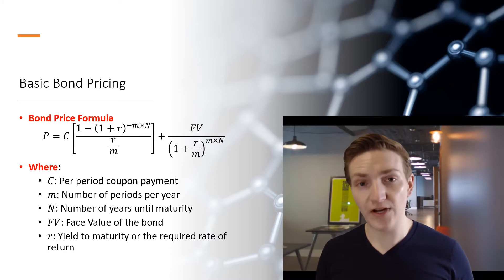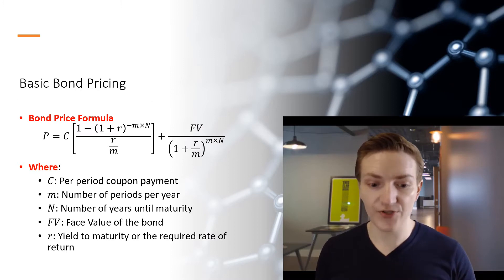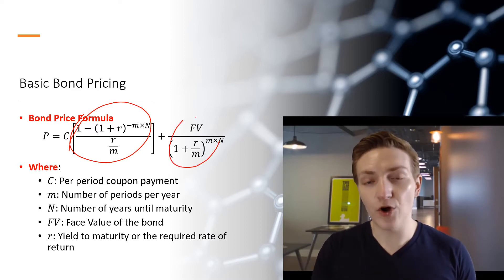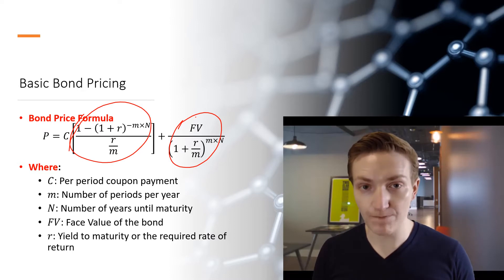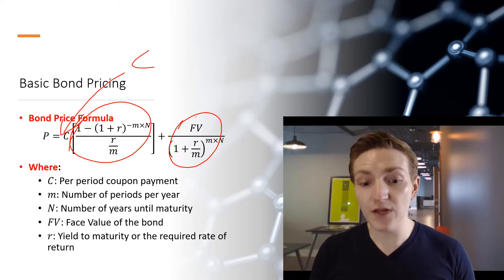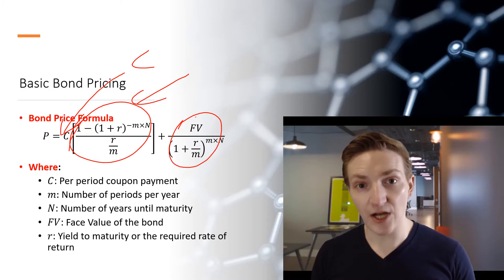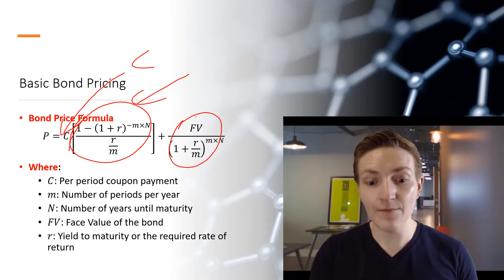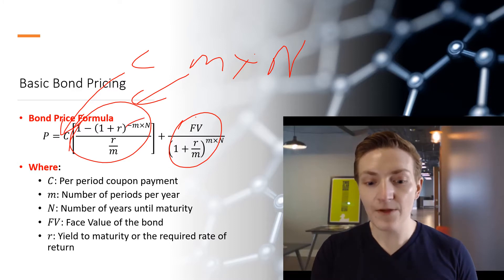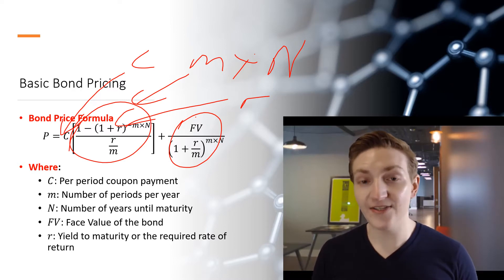We can start by looking at the basic bond pricing formula. Basically, the bond price contains two overarching components. Firstly, we've got a component that represents the present value of all of the coupons you're going to receive. Secondly, we have a component that represents the present value of the face value of the bond. For the coupons, we take the coupon per period — C here — and multiply it by the annuity formula, which represents the present value of a periodic payment of C coupons over M×N periods, where N is years and M is periods per year. We're discounting these back at R, being the yield to maturity — otherwise known as the required rate of return on the bond.